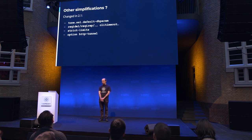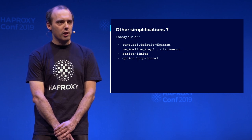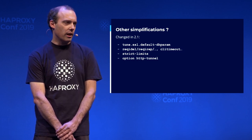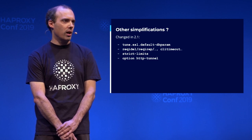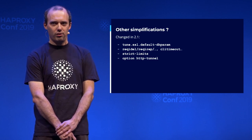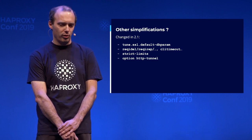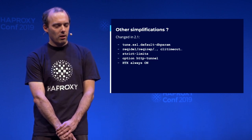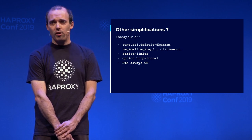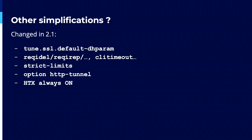We removed the 'option http-tunnel'. It was a leftover from 1.3 to ease the transition to 1.4, and people were using it as a hack for bad reasons. It doesn't cope well with HTTP/2 and HTTP/1 mixed — sending extra requests as data in a second HTTP request causes problems. HTX is always on now. We removed all the bogus legacy and tricky code. It was inefficient and was causing us gray hair trying to figure out how to fix issues.